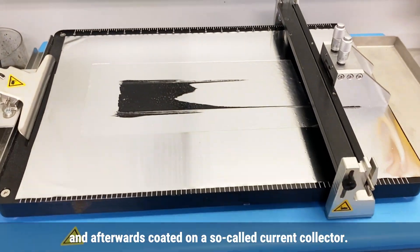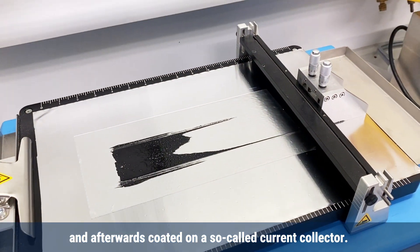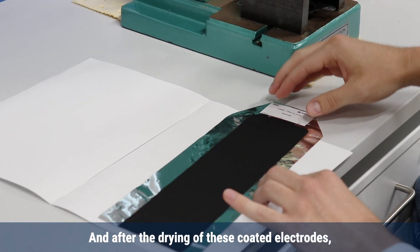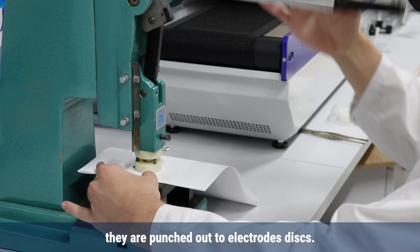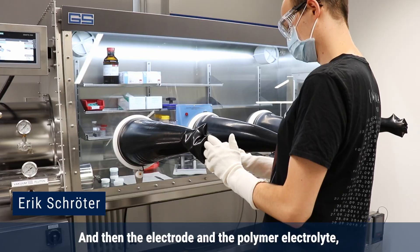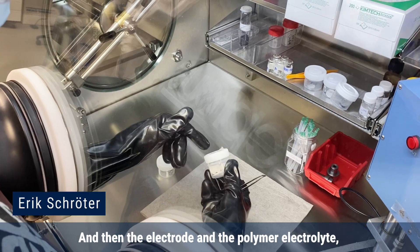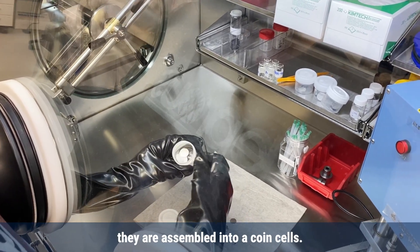This mixture is then mixed with a disperser and afterwards coated on a so-called current collector. After the drying of these coated electrodes, they are punched out with electrode discs. Then the electrode and the polymer electrolyte are assembled in coin cells.